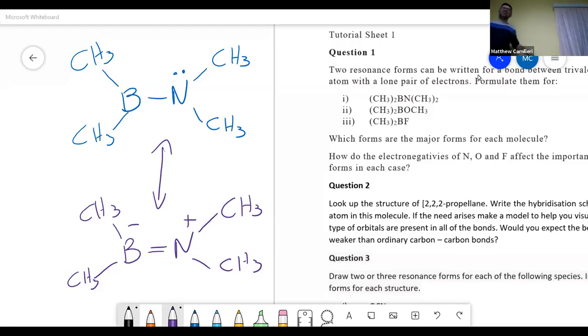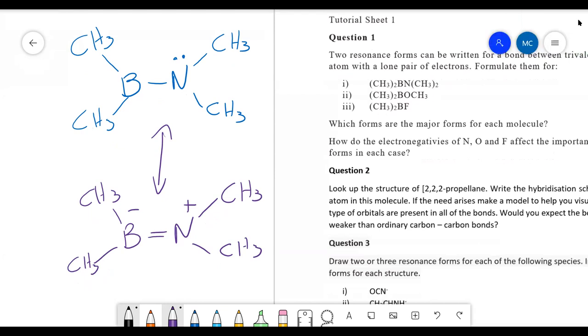So in this situation, you will have two resonance forms where you will have a negative charge separation. But even though charge separation is frowned upon, in this particular instance you will have full octet on both the boron and the nitrogen. Therefore, this would be the major structure. This would be true for boron and oxygen and boron and fluorine.